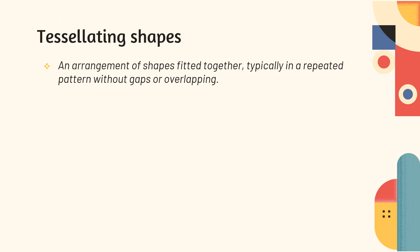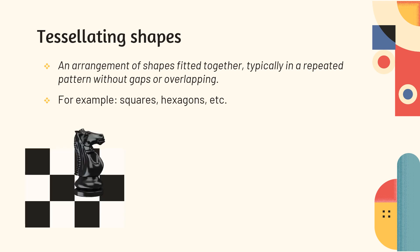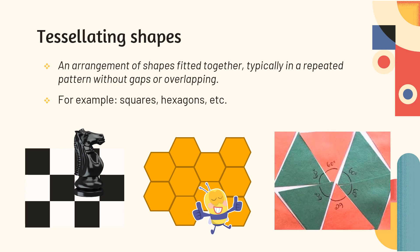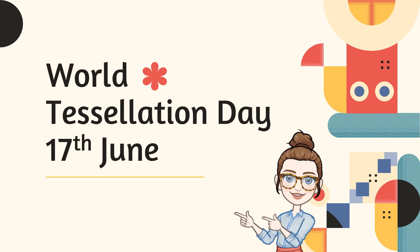Tessellating is arranging shapes to fit together, typically in a repeating pattern without gaps or overlapping. For example, we can have squares like on a chessboard, or hexagons like how bees make honeycomb — they do an amazing job. If you're interested, in order to tessellate any kind of polygon, all of the corners at the intersection need to join up to 360 degrees. Some people enjoy tessellating shapes so much that we celebrate World Tessellation Day every year on the 17th of June — maybe give it a think this year.